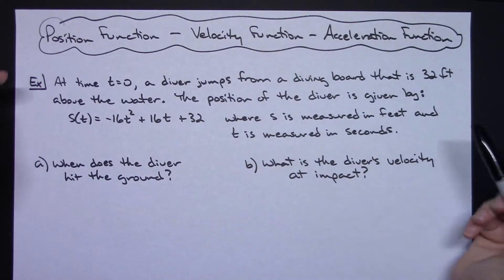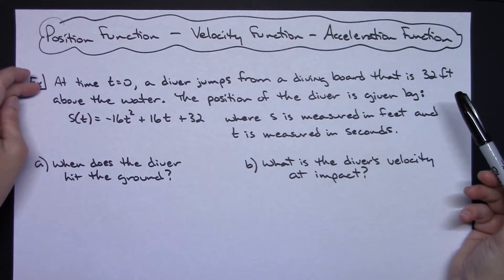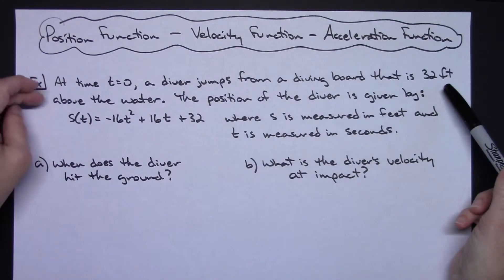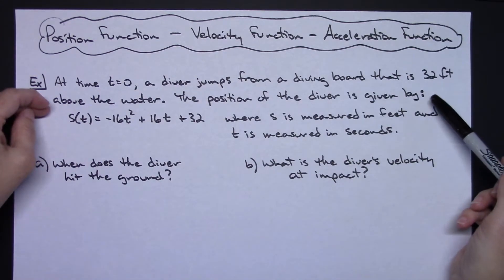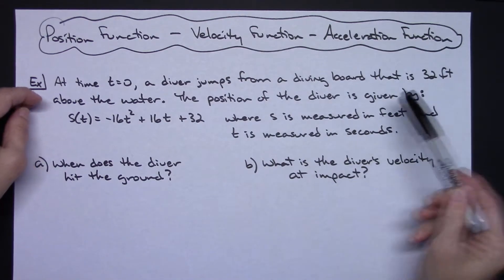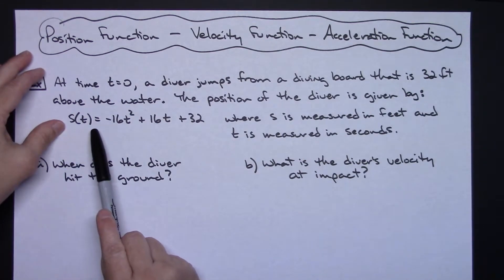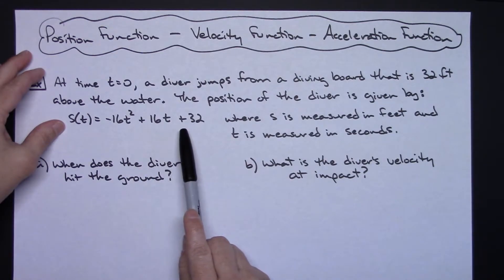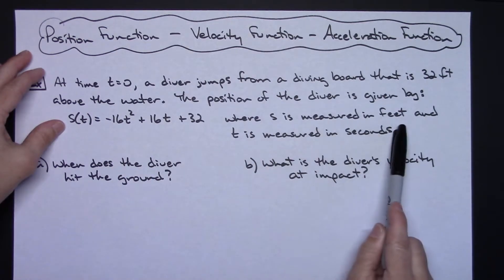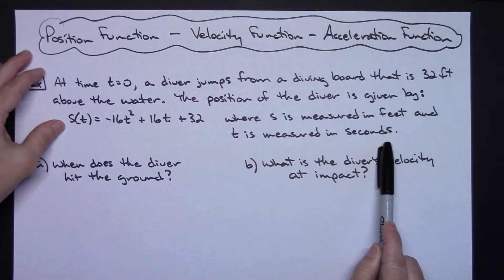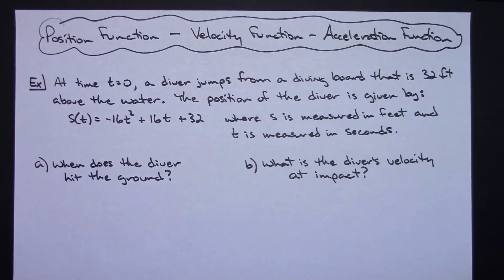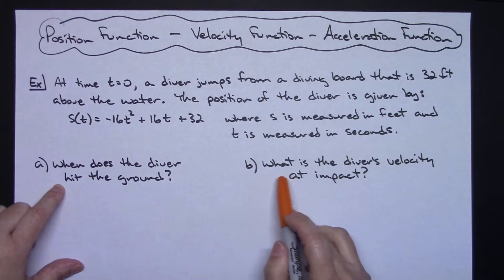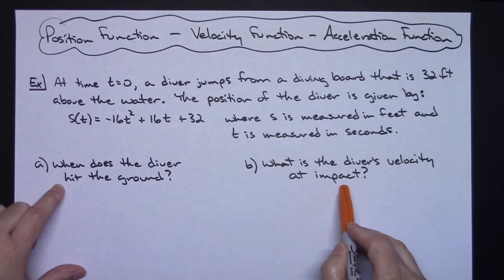For our first question: at time t equals zero, a diver jumps from a diving board that is 32 feet above the water. The position of the diver is given by s of t equals negative 16t squared plus 16t plus 32, where s is measured in feet and t is measured in seconds. They might set this up as a two-part question: when does the diver hit the ground, and what is the diver's velocity at impact?